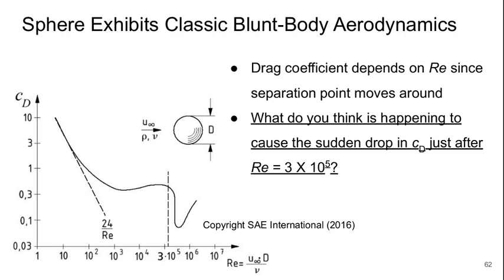We can also look at the drag coefficient over a sphere. This is kind of the most classical example of blunt or bluff body aerodynamics. The drag coefficient strongly depends on Reynolds number since the separation point moves around depending on Reynolds number. What do you think is happening to cause the sudden drop in drag coefficient just after 3 times Reynolds number of 300,000?